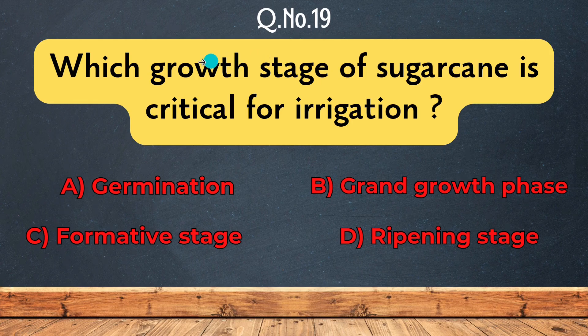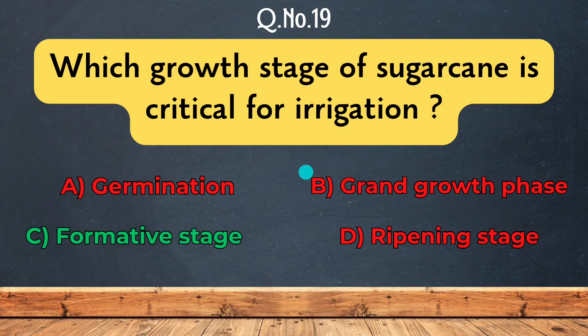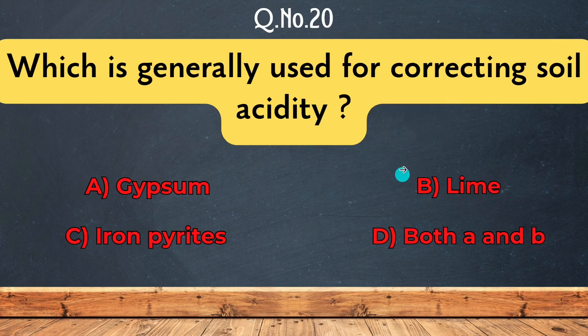Question 19: Which growth stage of sugarcane is critical for irrigation? Options are Germination, Formative stage, Ripening stage, or Grand growth stage. The correct answer is Formative stage.